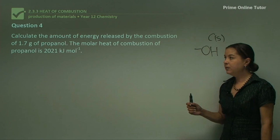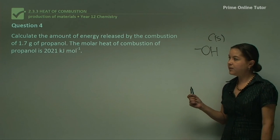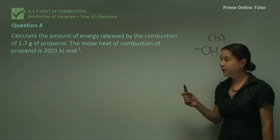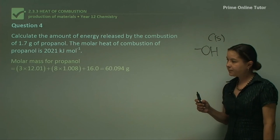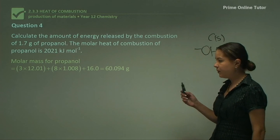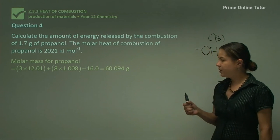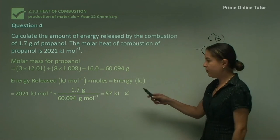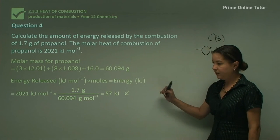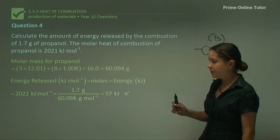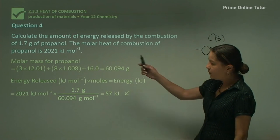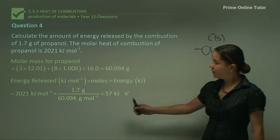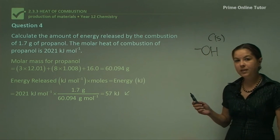Question four: calculate the amount of energy released by the combustion of 1.7 grams of propanol, given the molar heat of combustion of propanol is 2,021 kJ/mol. The molar mass of propanol is 60.094 g/mol. Energy released equals molar heat of combustion × number of moles: 2,021 × (1.7 ÷ 60.094) = 57 kJ.